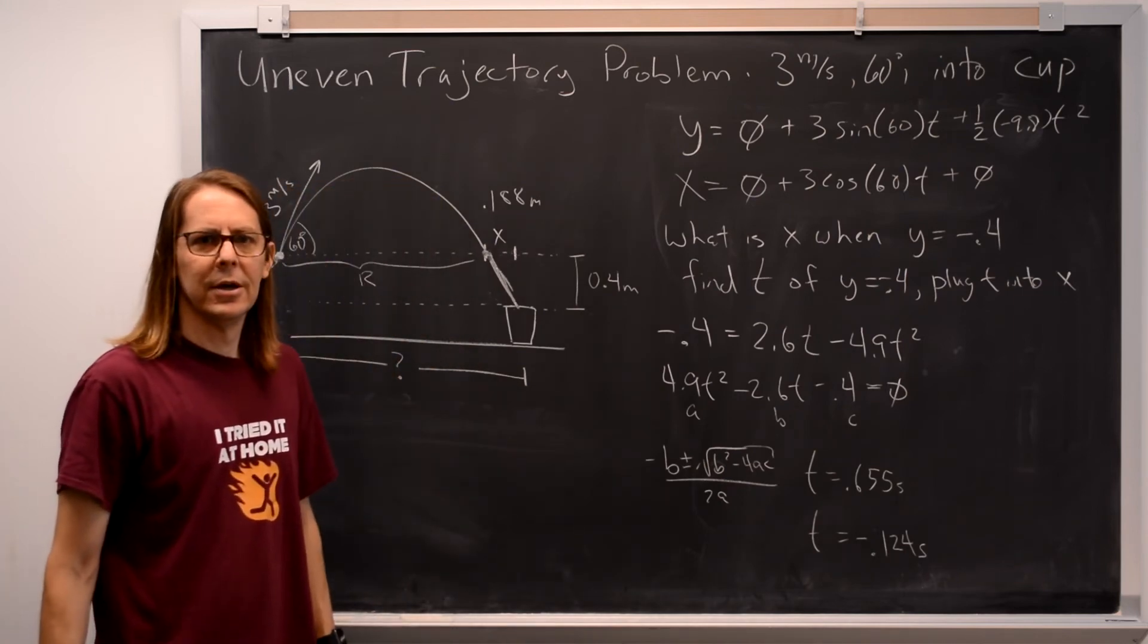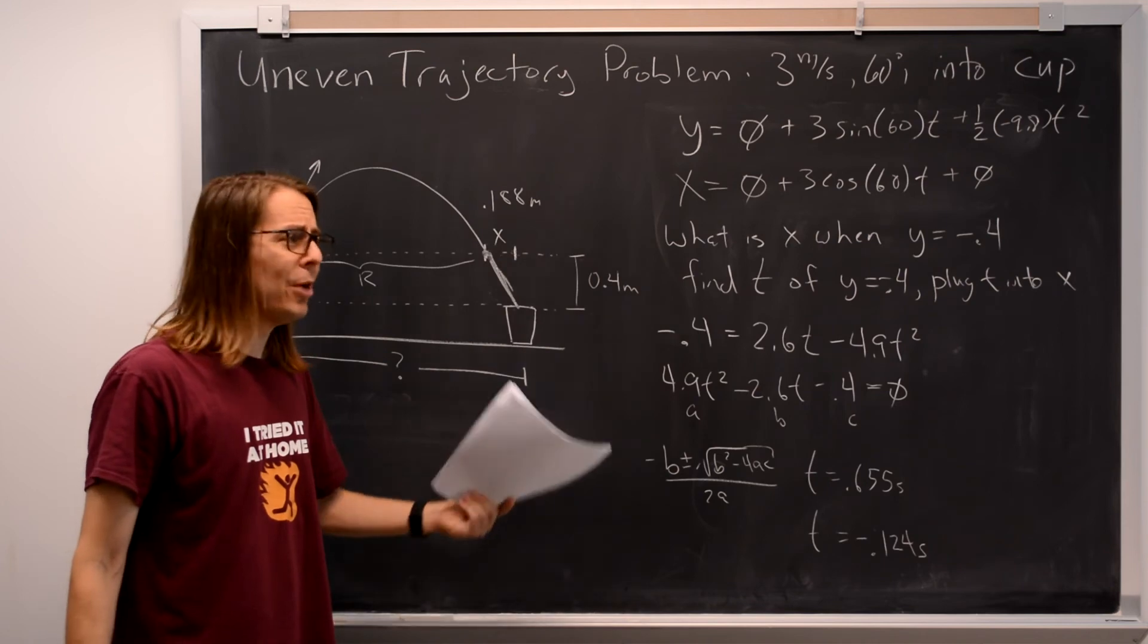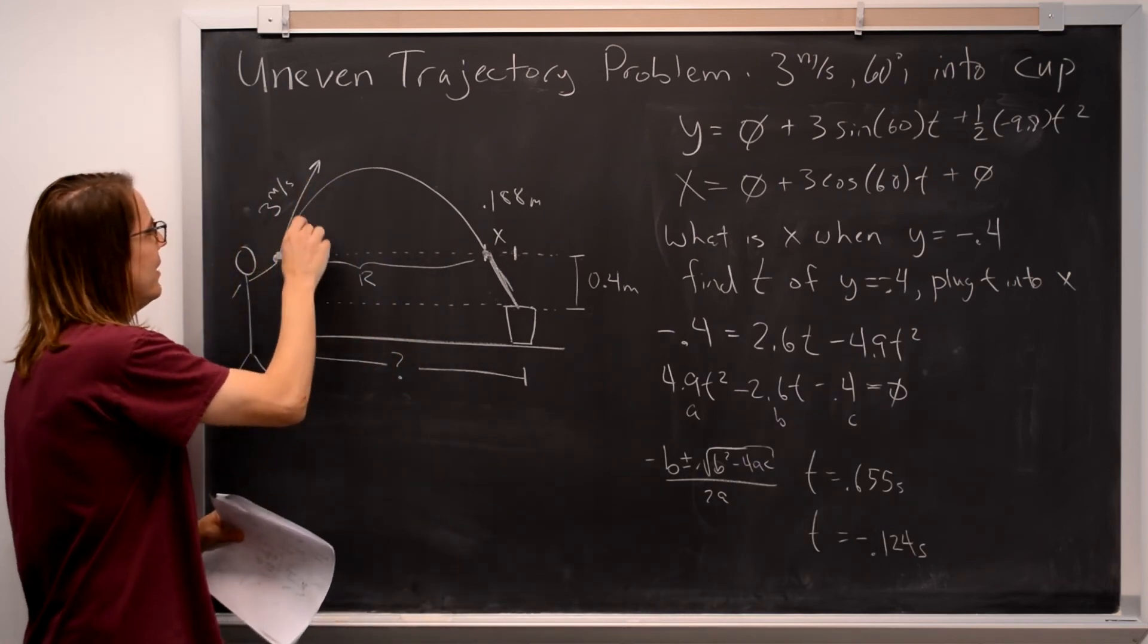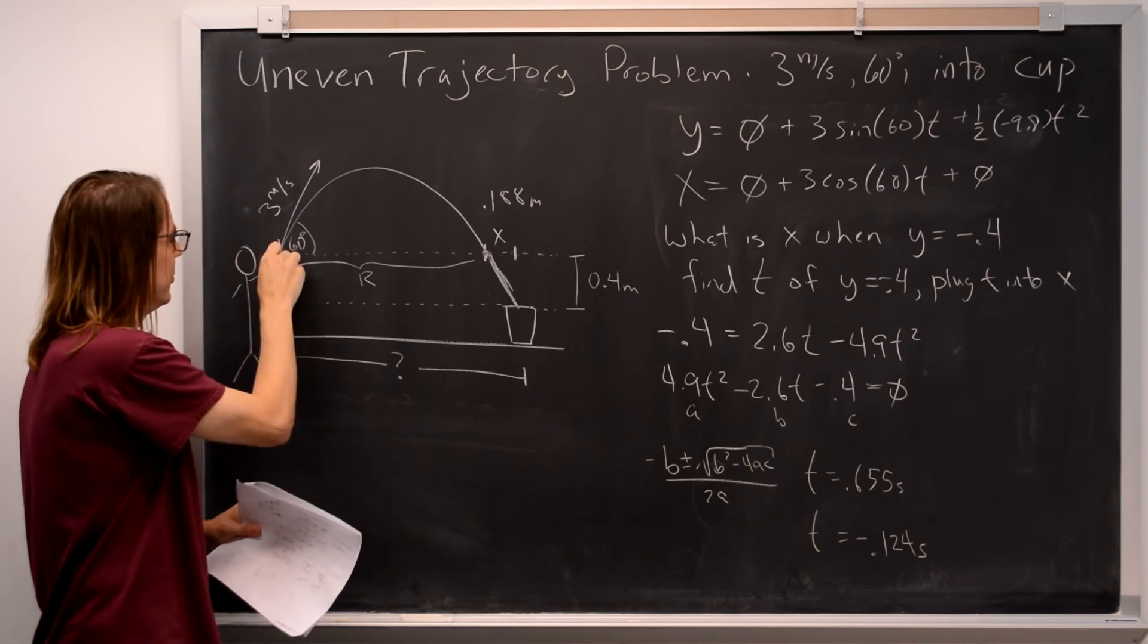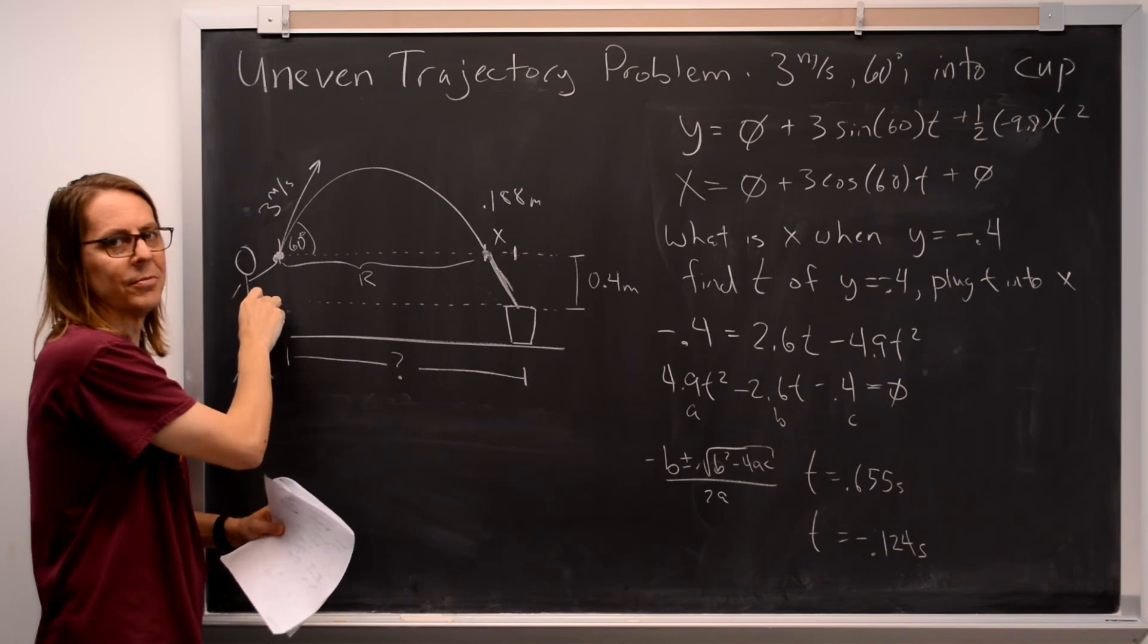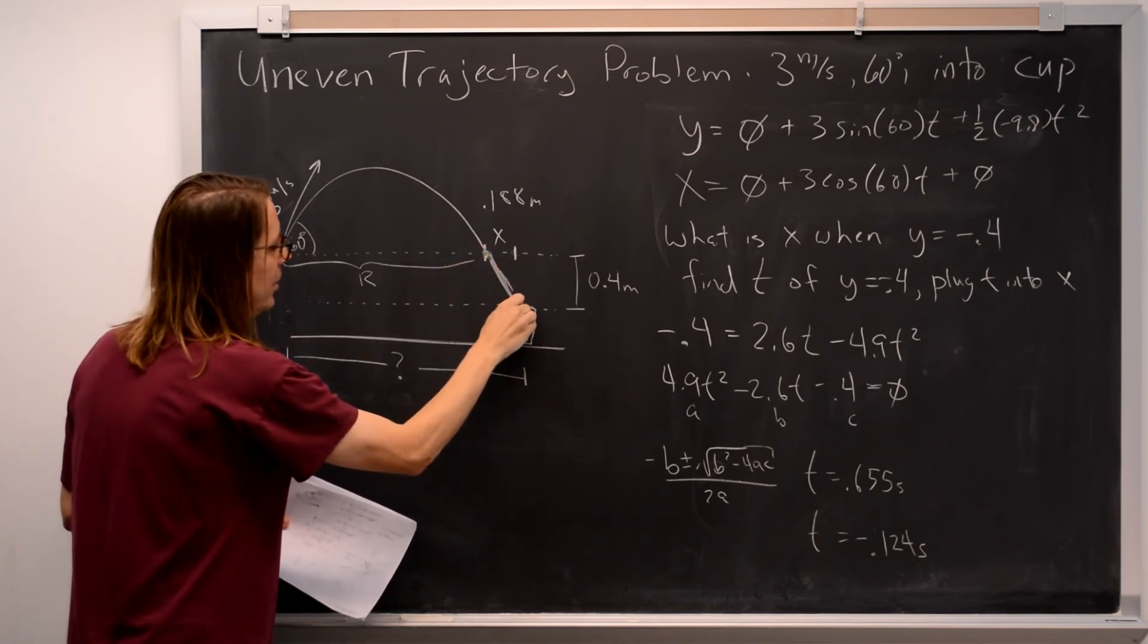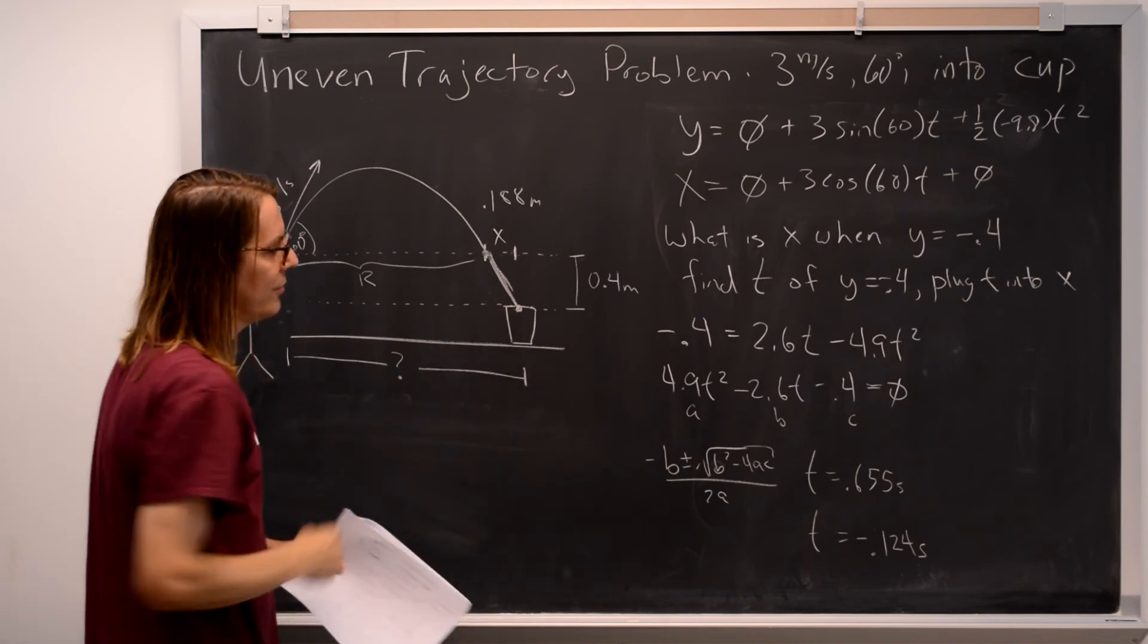Those are both answers. So, you might get confused on this, of which one to use. And you'd probably guess, well, I guess I'll use a positive one. And you'd be right if you want to use a positive one. But the negative one does have a meaning. The negative one is saying, if this trajectory started at negative 0.4, this is when it would have happened. Because we define this as t equals 0. So, it would have crossed this line at negative 0.124 seconds. If it was starting back here at a little bit faster, at a little bit higher angle. But we don't care about that. We care about this time. So, we have found the time here. Not just the symmetric part. We have found the time there. At 0.655 seconds.